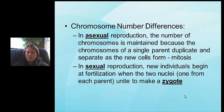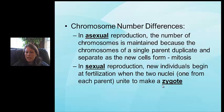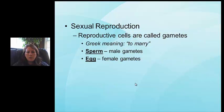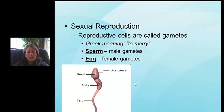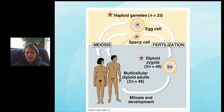Chromosome number differs between asexual and sexual reproduction. In asexual reproduction, the chromosome number is maintained through mitosis. In sexual reproduction, the process of meiosis produces cells with half the number of chromosomes. The male produces half and the female produces half, and when those two nuclei unite, that union is called a zygote — from the Greek word meaning 'to marry.' The sperm is the male gamete and the egg is the female gamete.